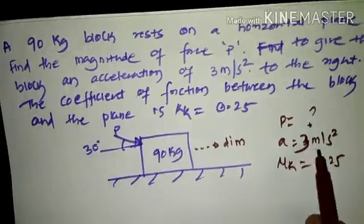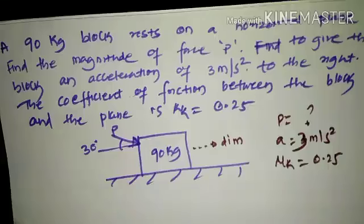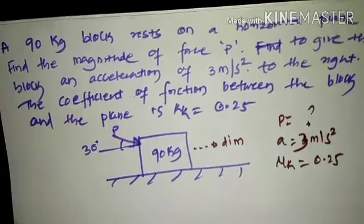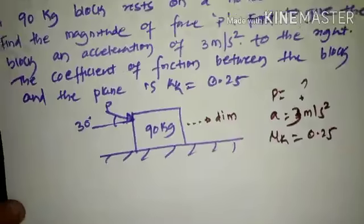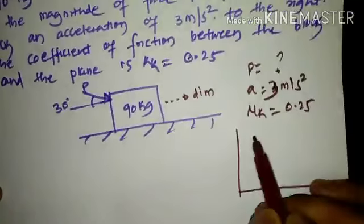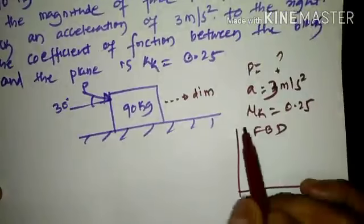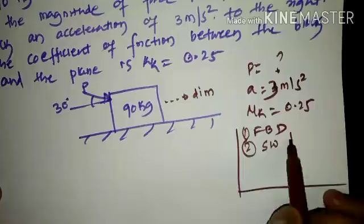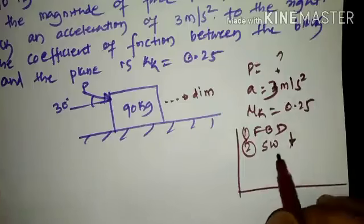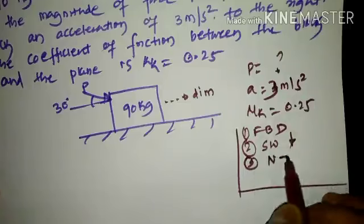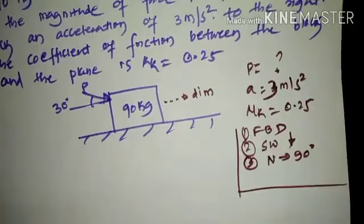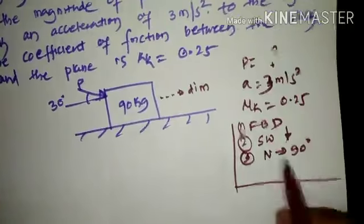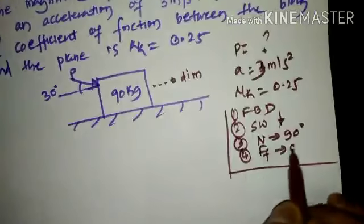To find the value of force P that creates an acceleration of 3 m/s², we first need to draw the free body diagram. We must ensure that self-weight is always in the vertically downward direction, and the reaction will always make an inclination of 90 degrees to the plane of contact, whether the plane is horizontal, vertical, or inclined.